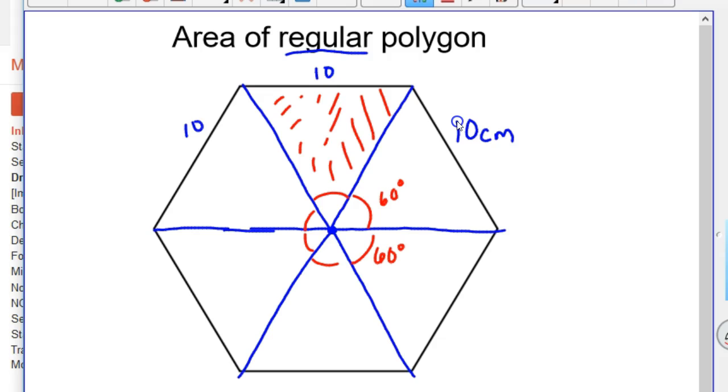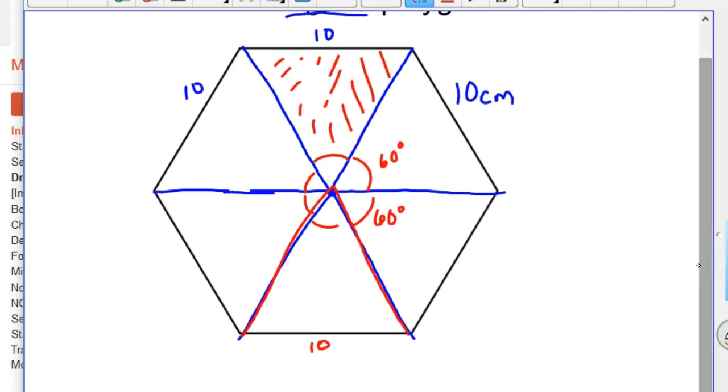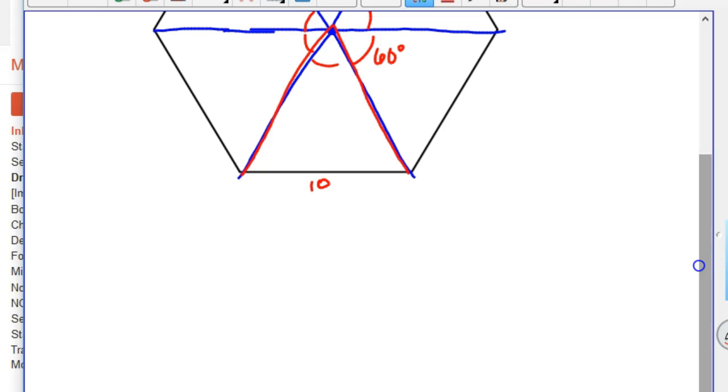So we'll just concentrate on this bottom one now. And so we know that the base is 10 because the polygon is regular, so all the sides are 10. Well, let's go ahead and start working on finding the area of this triangle on the bottom. Well, for a triangle you need a height. In a polygon, that height is called the apothem. And so that is that length right there. It has its own name. Just like these are called radiuses or radii, that height is called the apothem.